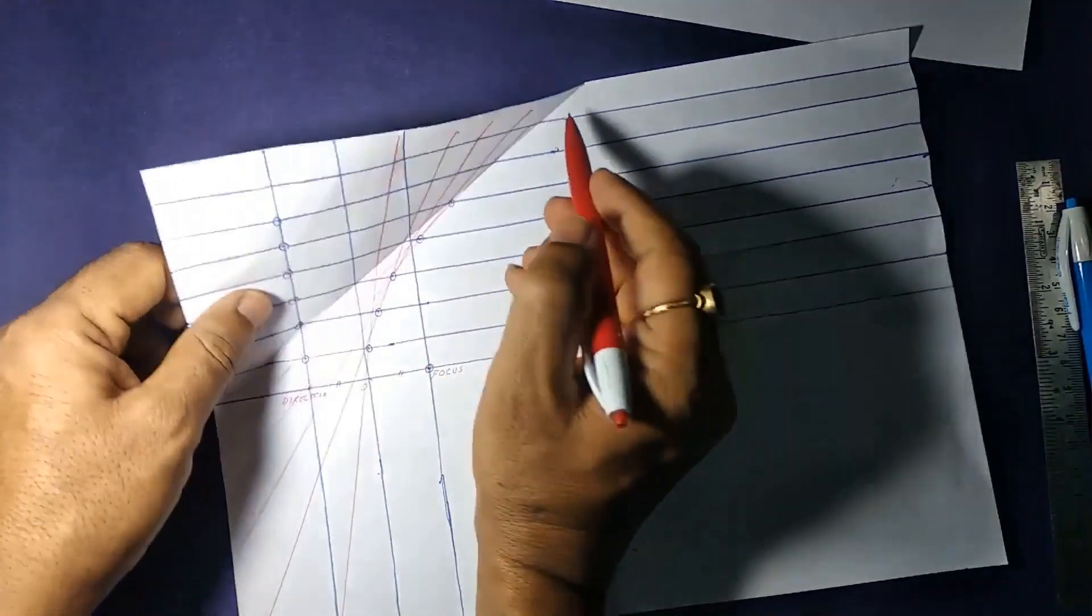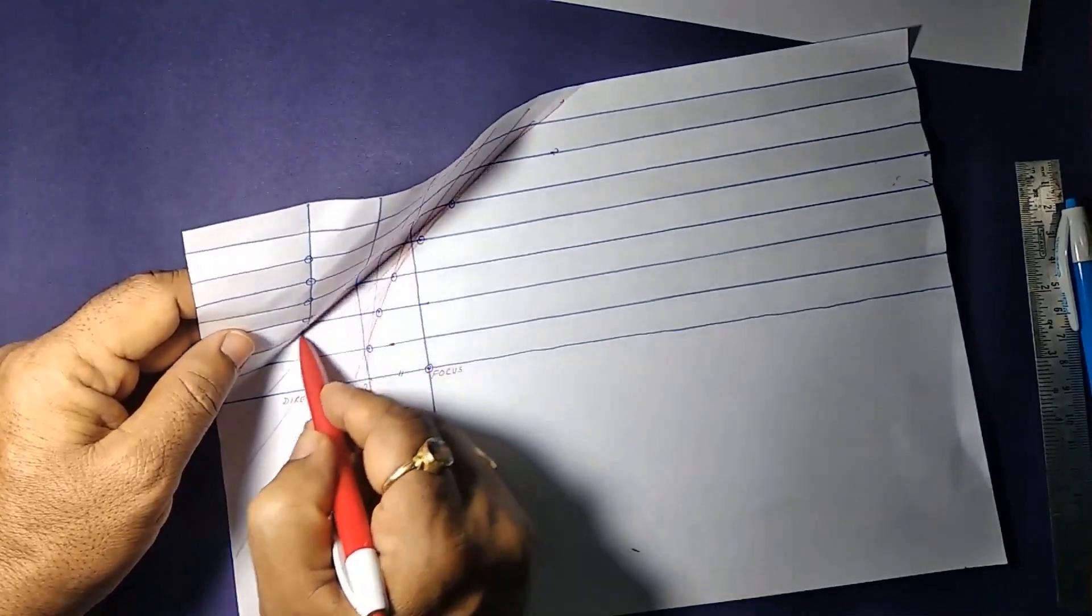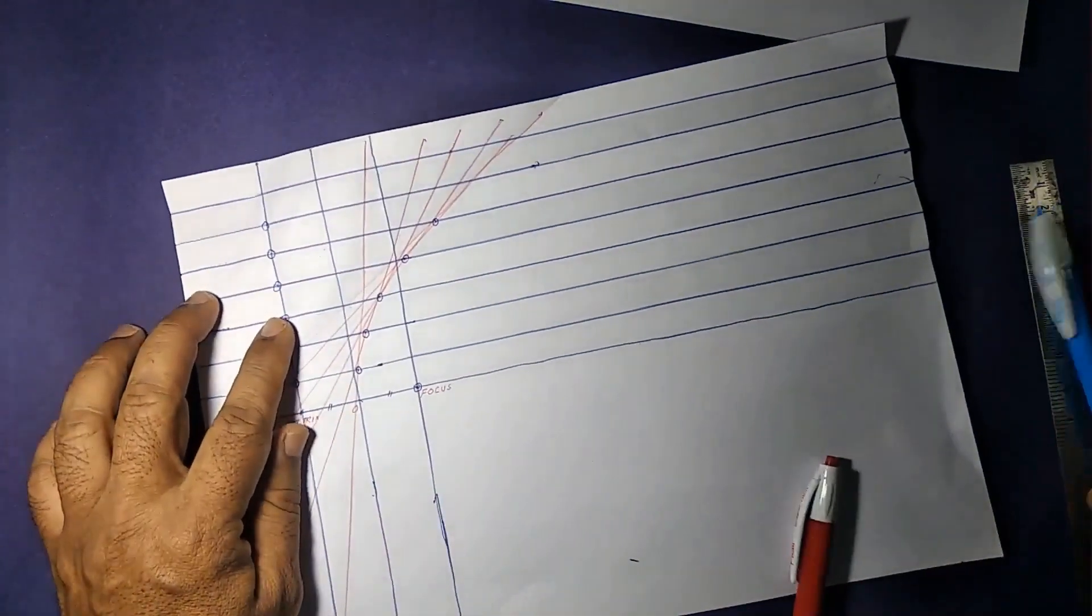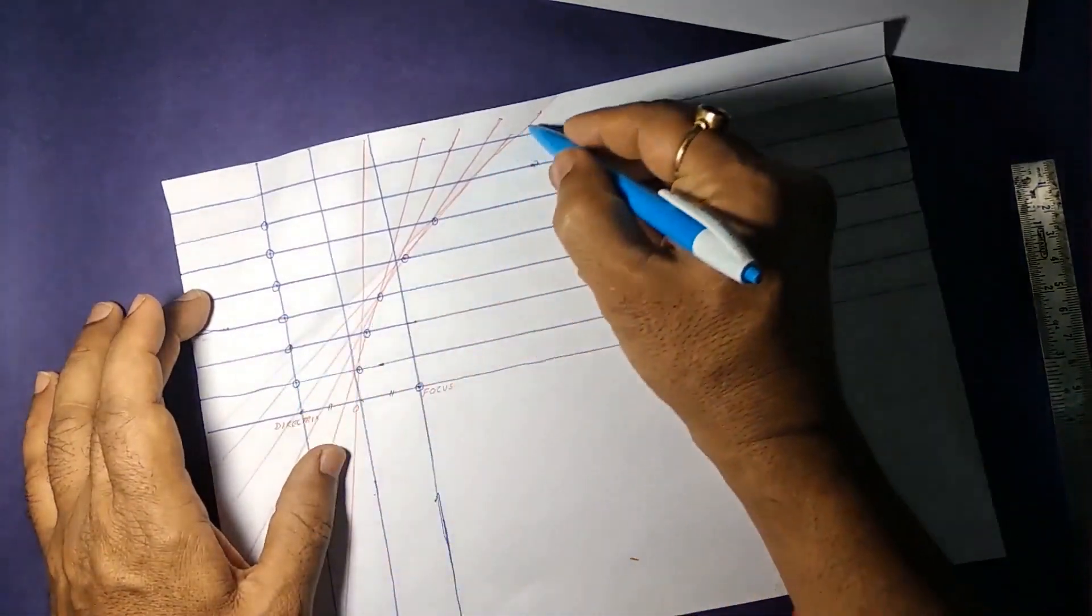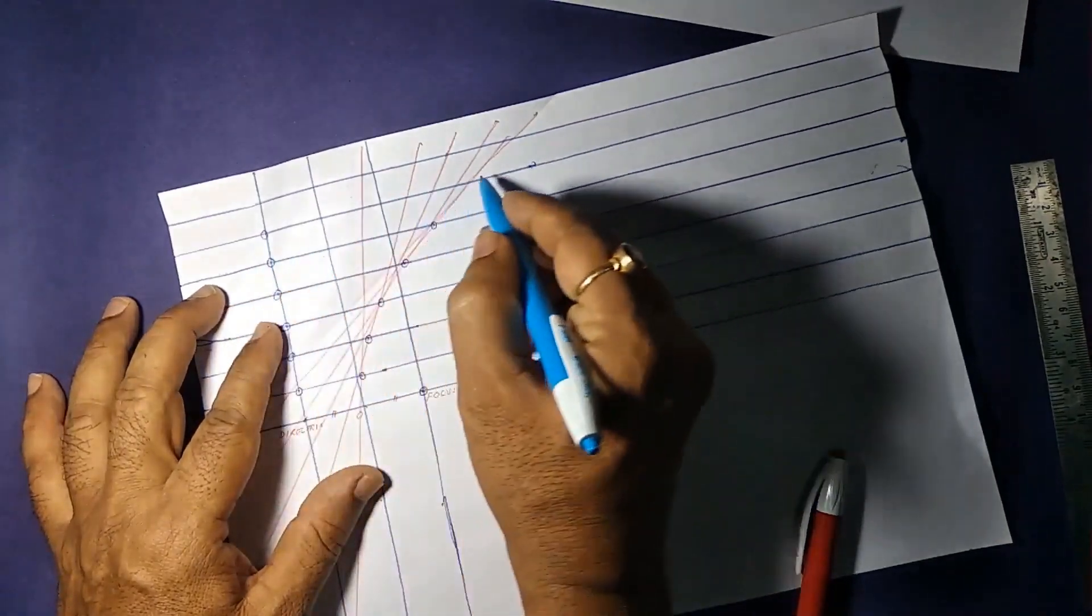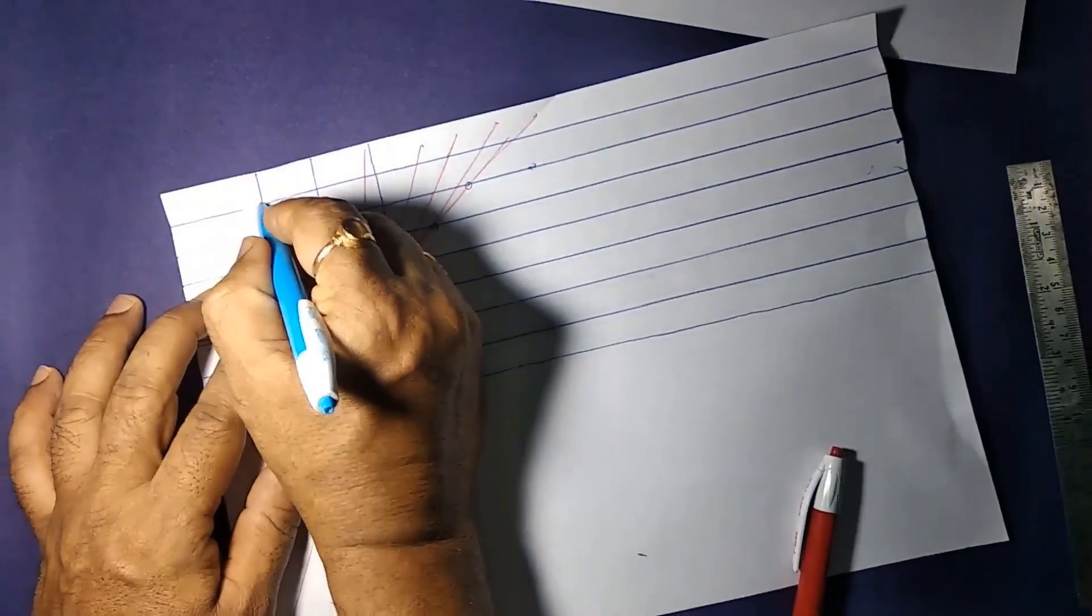And all these points are lying on the parabola. So these all lines together make the parabola.